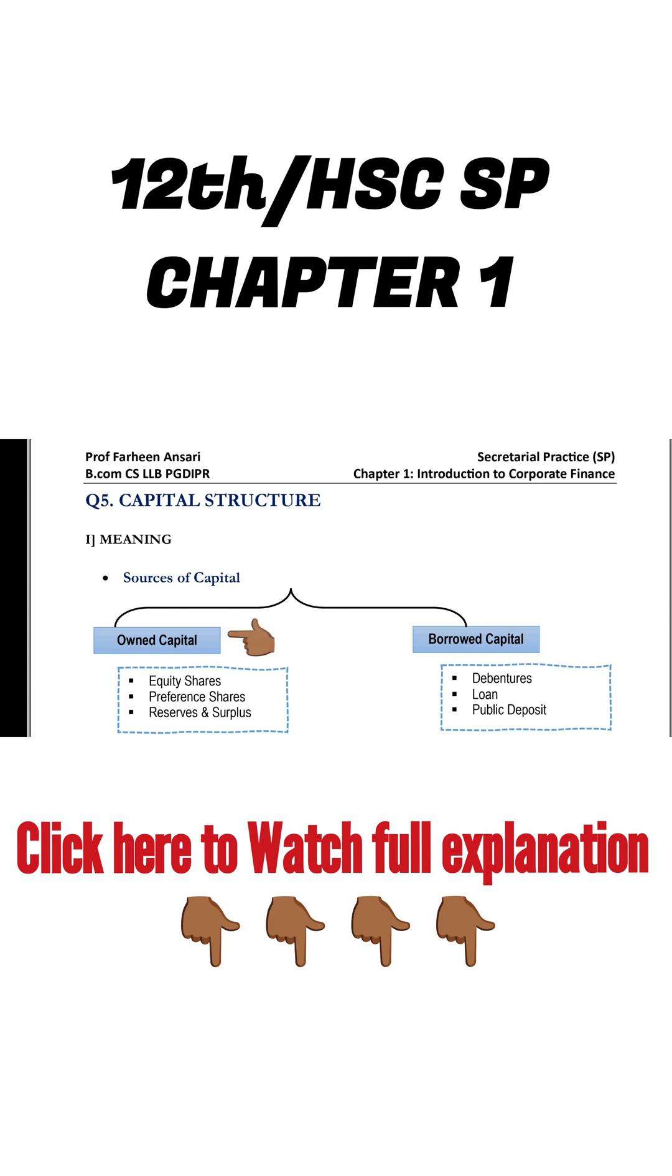Number one, owned capital and number two, borrowed capital. Owned capital - jab company shares issue karti hai and people who buy the shares of the company become the shareholders of the company. And as we all know, shareholders are the owners of the company.